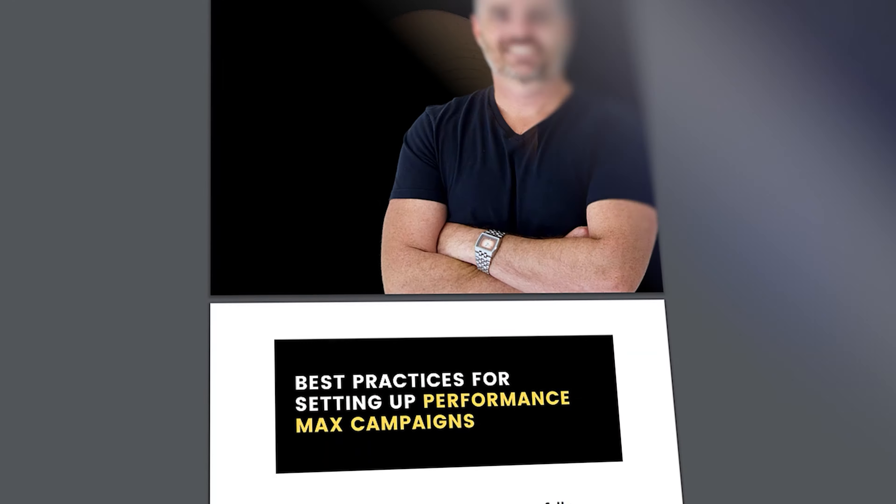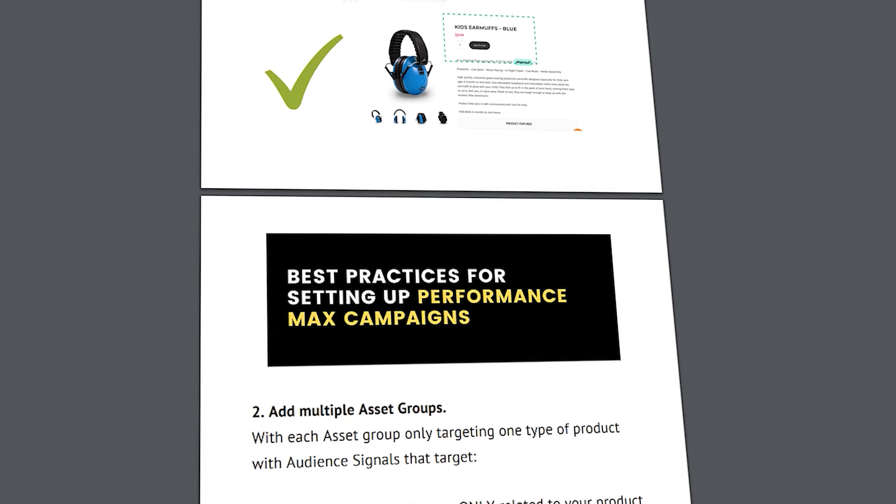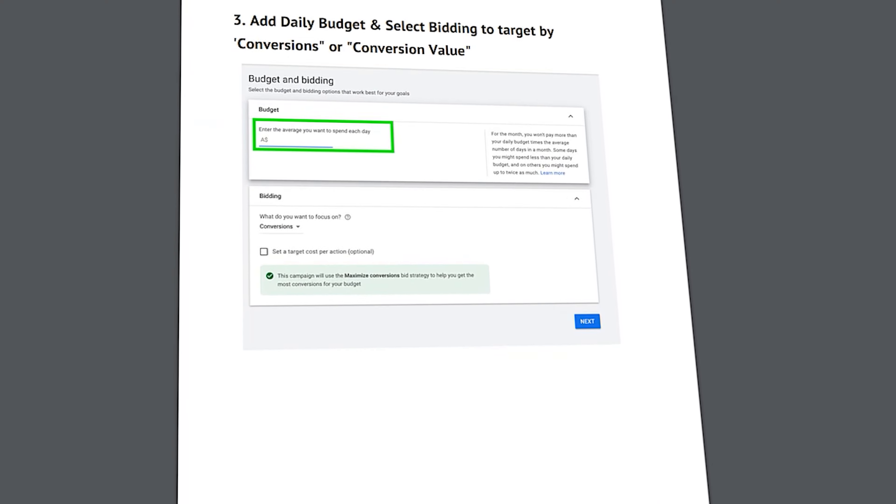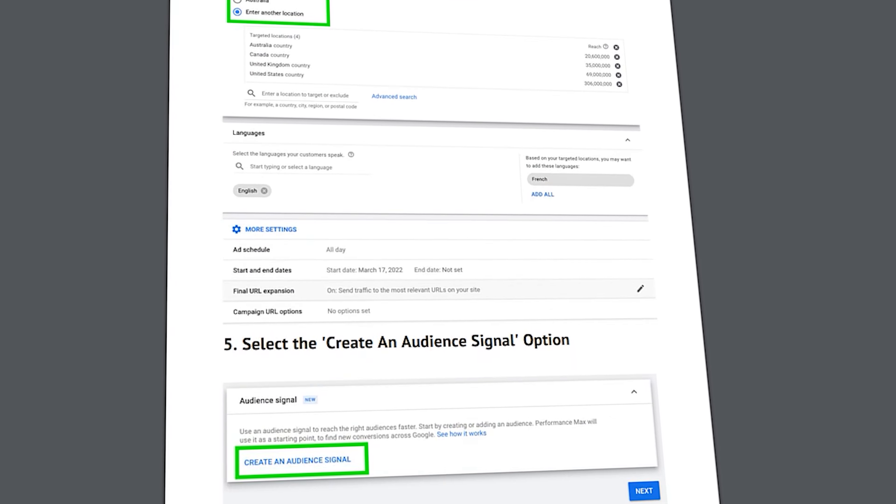If you do miss any of these steps, you don't need to be worried, because if you follow the link in the description below, you can go to my updated Performance Max campaign setup guide. This guide has all the different screenshots that I'm going to be taking you through, so that you can follow along at a slower pace. So right now let's jump into a screen share so I can show you how to set up your very own Performance Max campaigns in Google Ads in 2023 with the new Google Ads dashboard design.